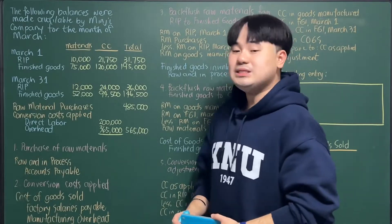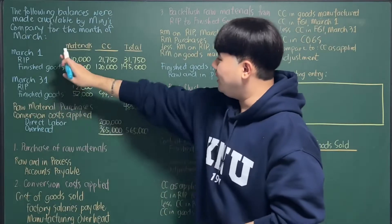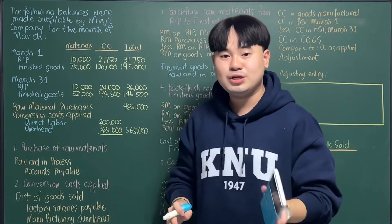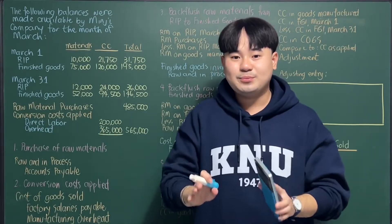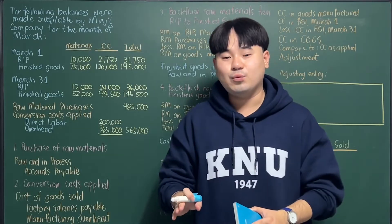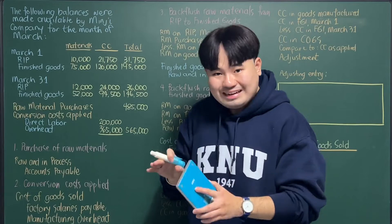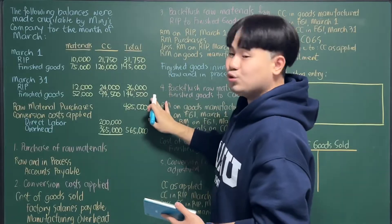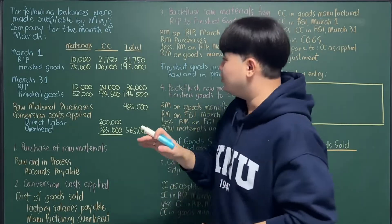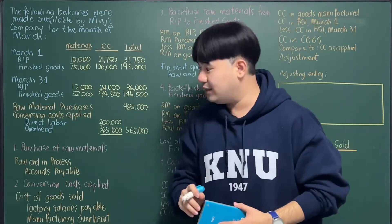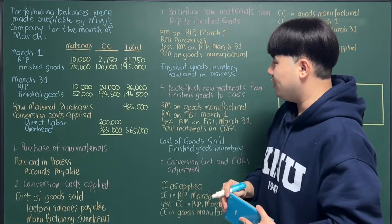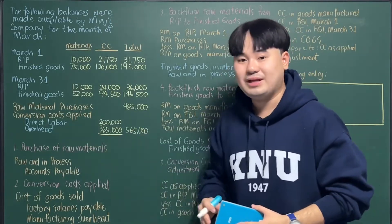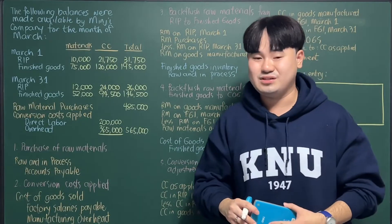The following balances were made available by Minzy Company for the month of March. We have beginning and ending balances of the raw and in process account and finished goods inventory account. In JIT and backflush costing, we don't use a separate raw materials inventory and work in process inventory — we have it directly as RIP or raw and in process. There is also a purchase of raw materials during March of $485,000, and conversion costs applied — direct labor and overhead — totaling $565,000.